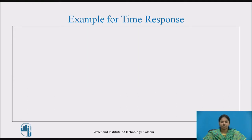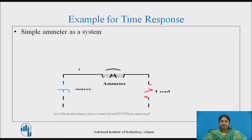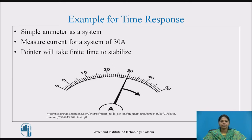Let's see an example for time response. Consider a simple ammeter as a system. It is connected in a system so as to measure a current of magnitude 30A. The ammeter pointer must deflect to show us a 30A reading, which is the ideal value it must show. Now the pointer will take some finite time to stabilize to indicate a reading, and after stabilizing, it depends on various factors like friction, pointer inertia, etc. Even after this, it is not guaranteed whether it will show an accurate reading of 30A or not.